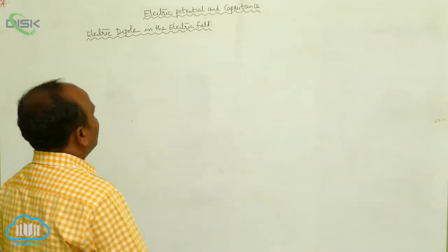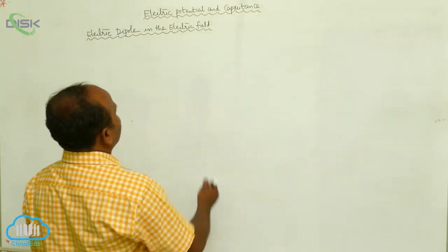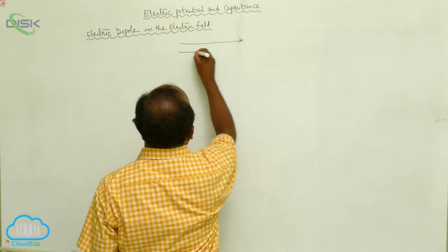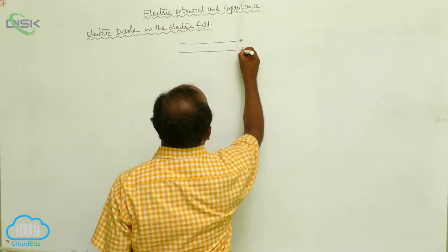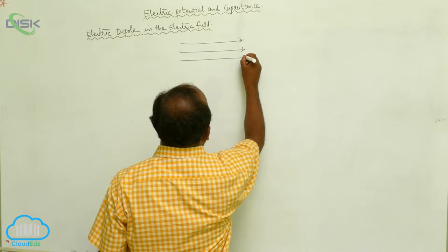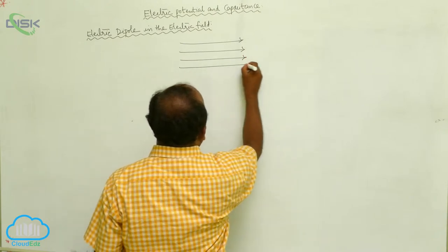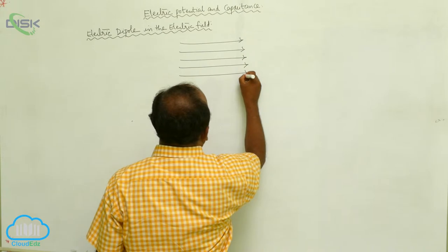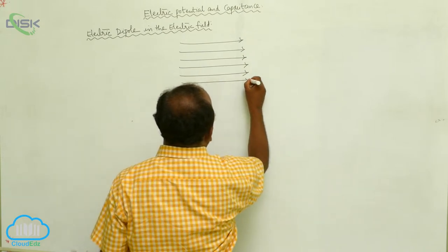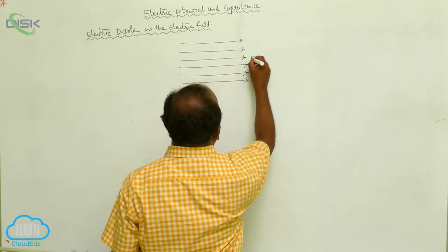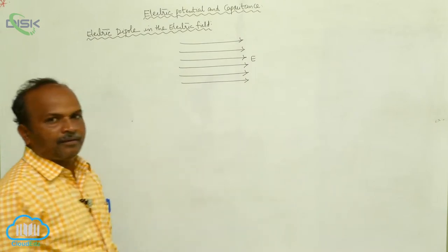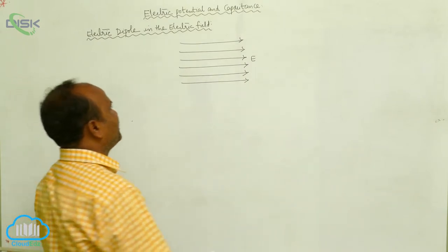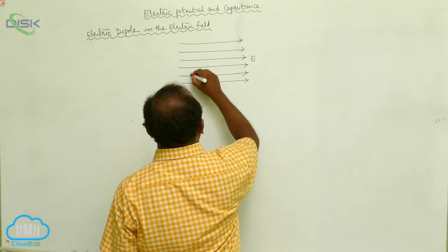First of all, consider a uniform electric field. For the uniform electric field, the electric lines of force are parallel and equidistant. In this uniform electric field, there is a dipole.